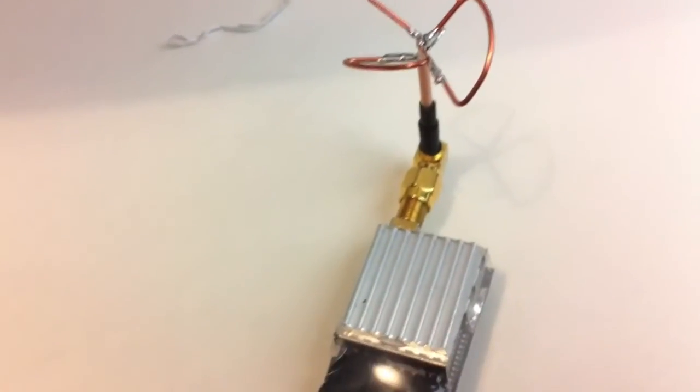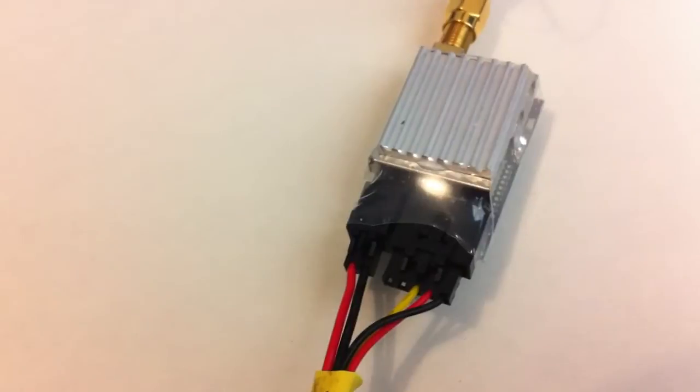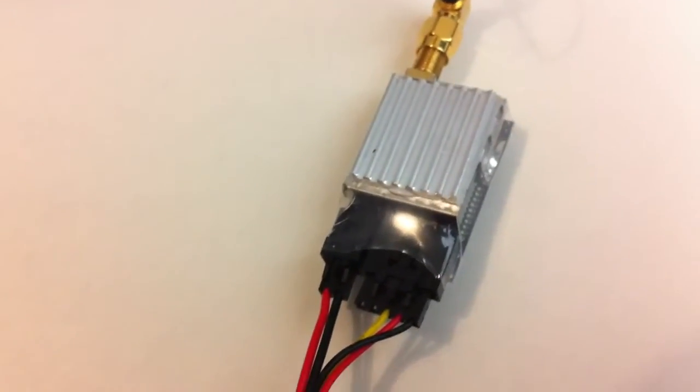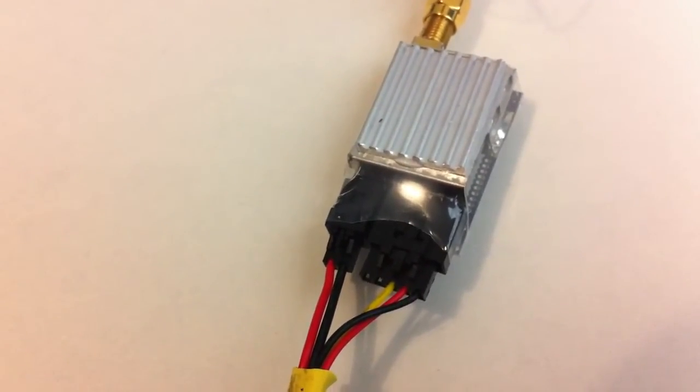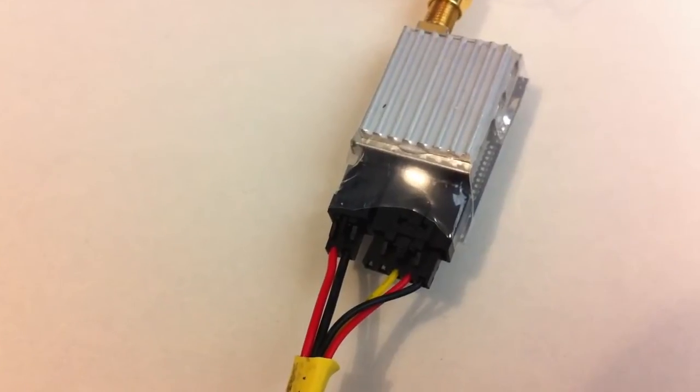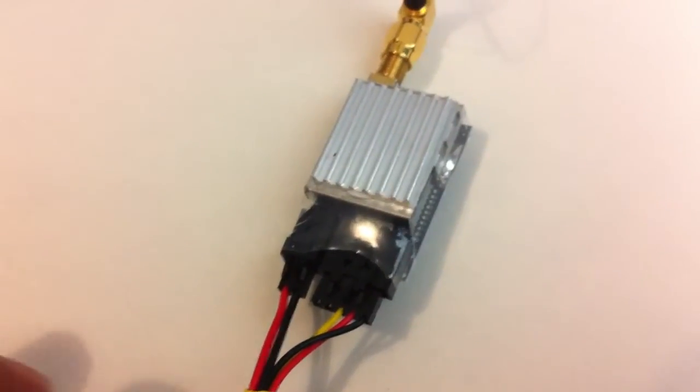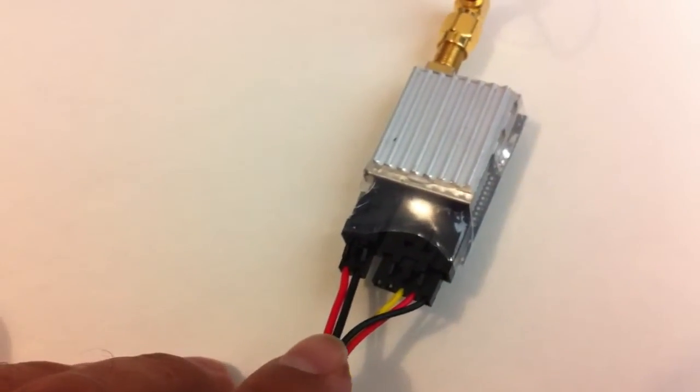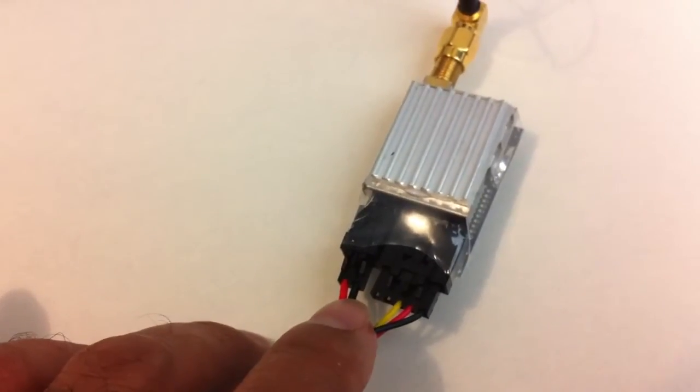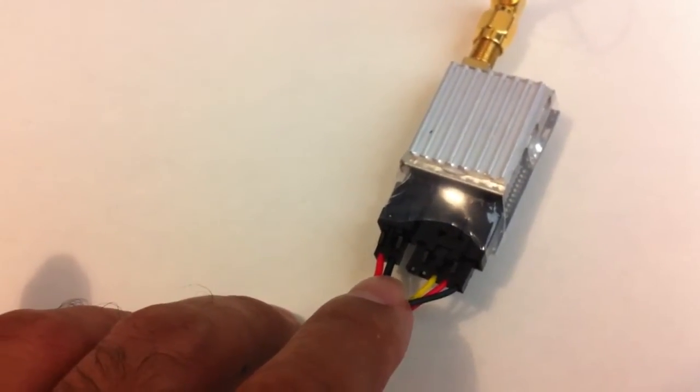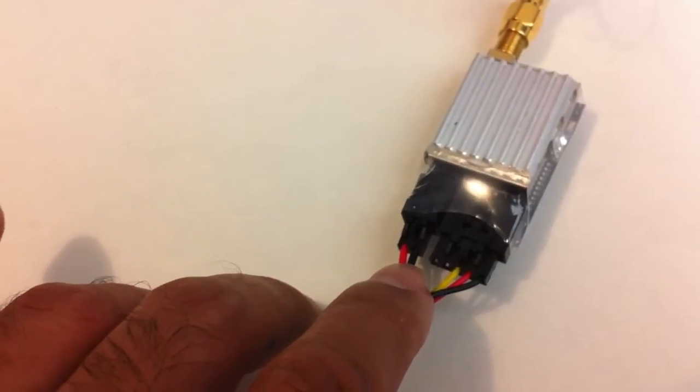So we'll start with the transmitter first. This is the transmitter that goes on the aircraft and what we have starting from the left: we've got the red wire, obviously positive, and the black wire negative. What we also have here is the yellow wire is actually the video out coming from the camera or the on-screen display.